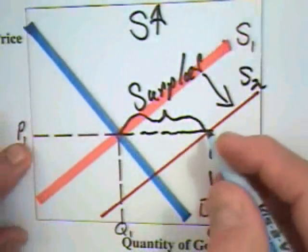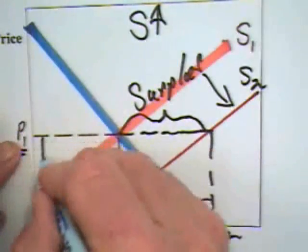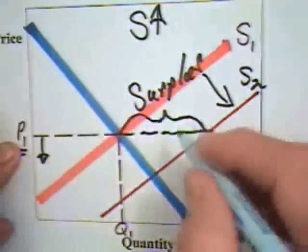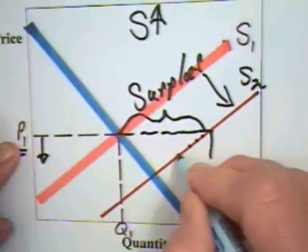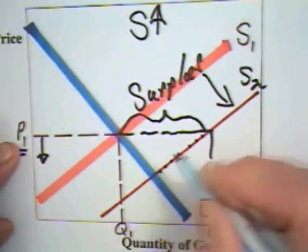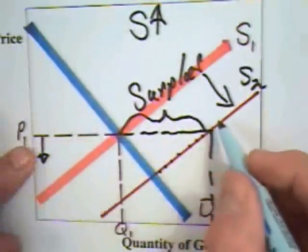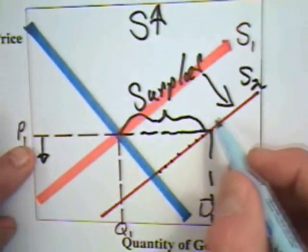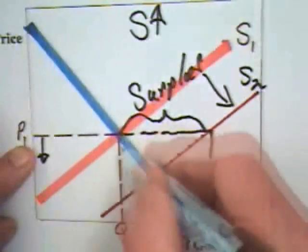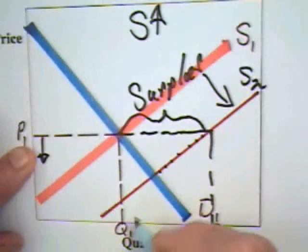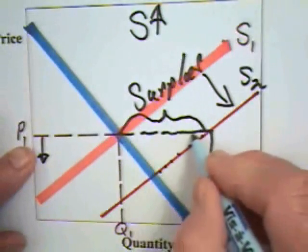Again, we're going to have competitive pressure to push this price down. Why? Because there are producers out here that have lower marginal costs than the price of P1. They're producers who are obviously not selling as many as they would like. And in order to sell more, to get the quantity bought beyond Q1, they've got to lower the price.